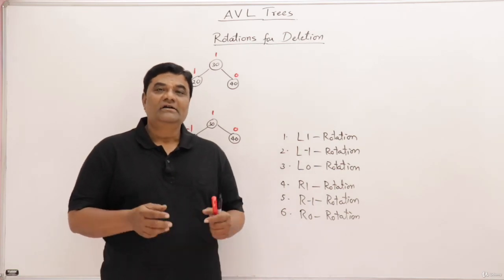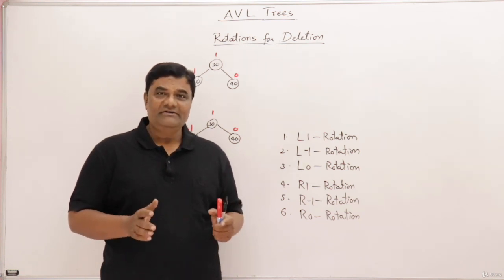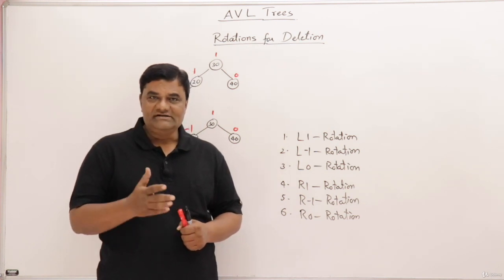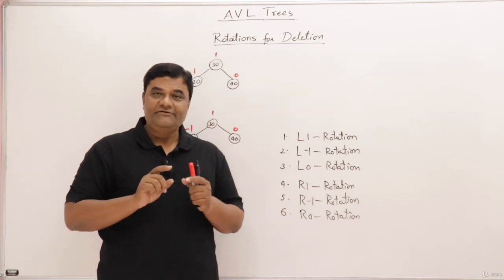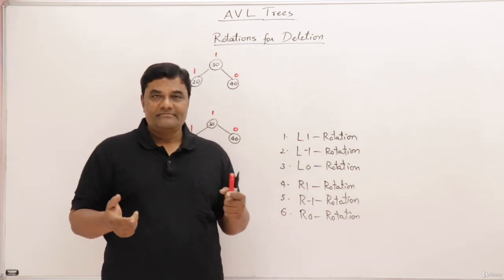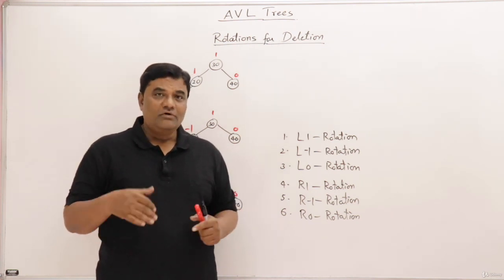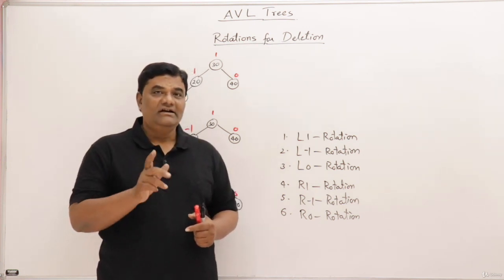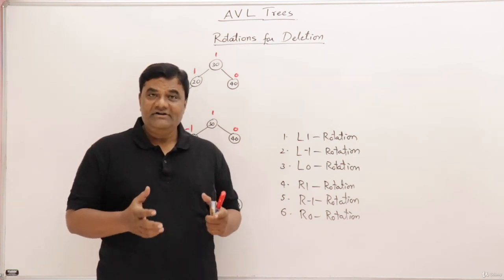The topic is deletion from AVL tree. Deletion from AVL tree is the same as deletion from binary search tree. The procedure is: first search for the key you want to delete; if found, delete it. Then an in-order predecessor or in-order successor will take its place. If you want to review this, you can go back to the deletion from binary search trees video.